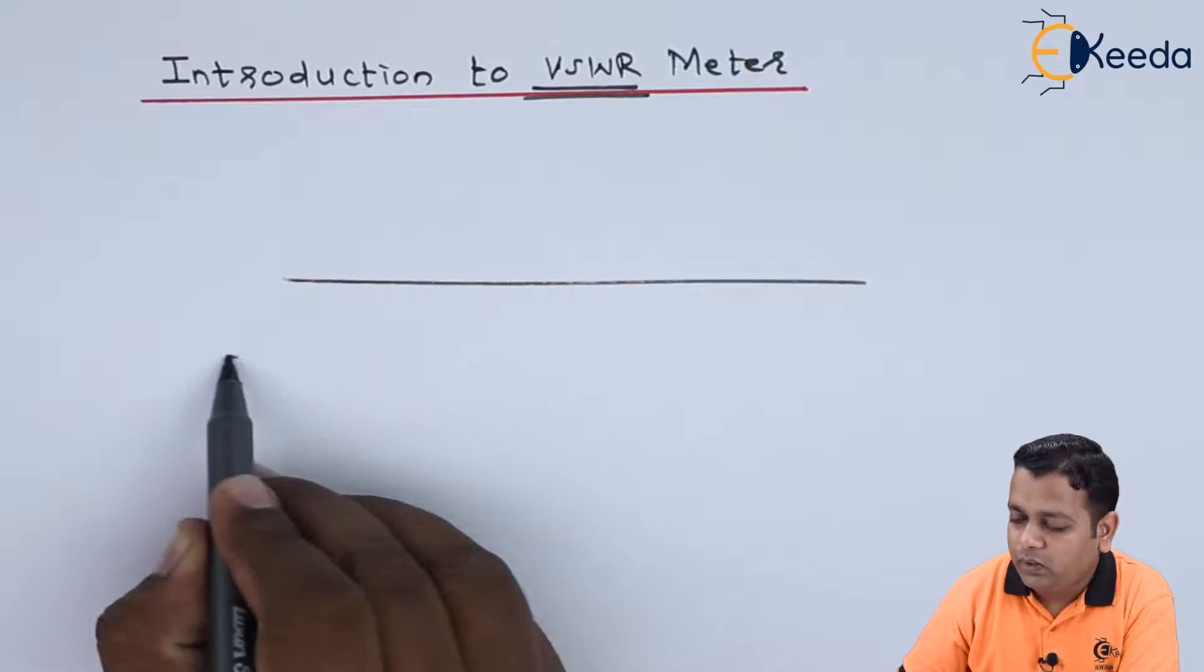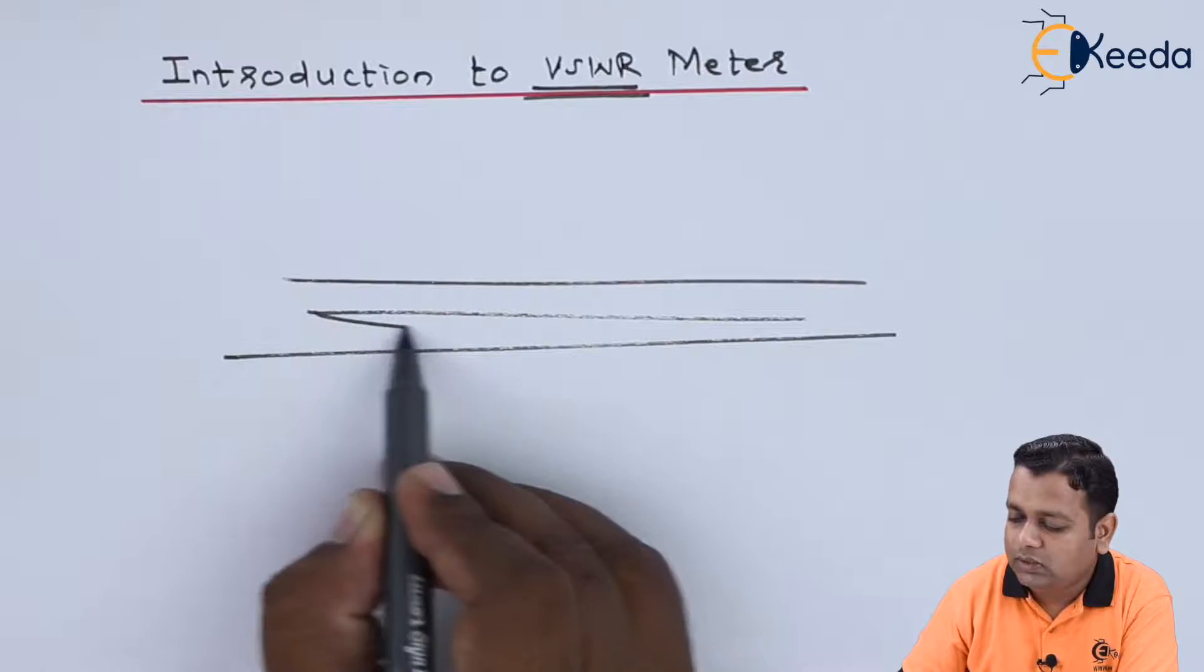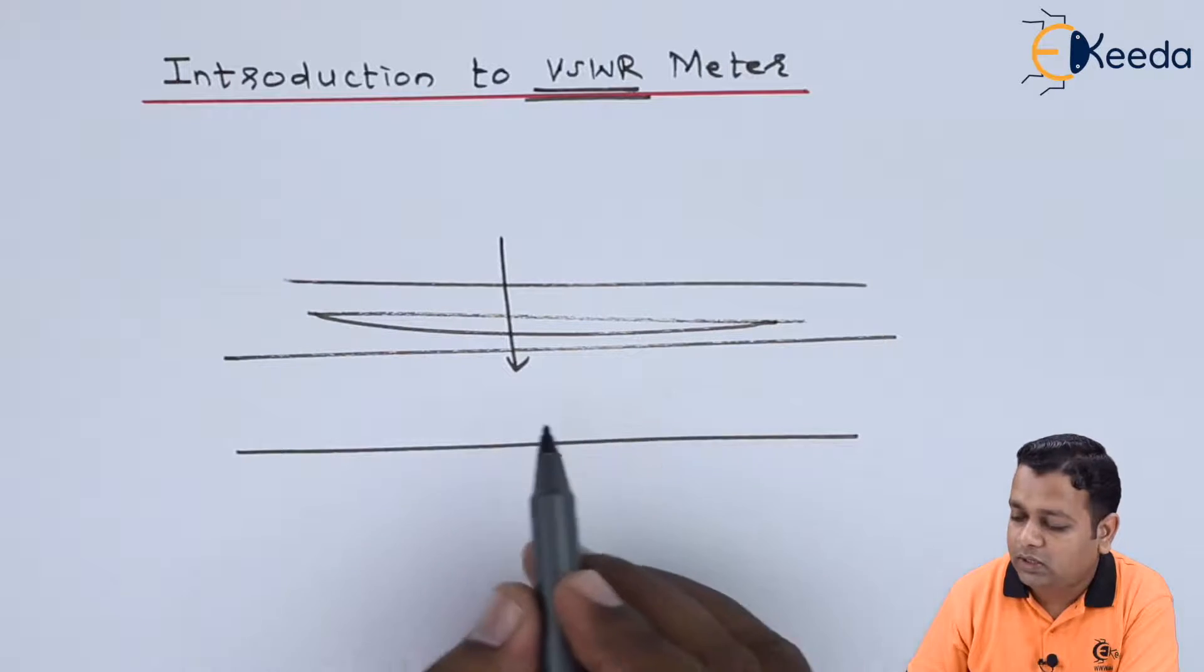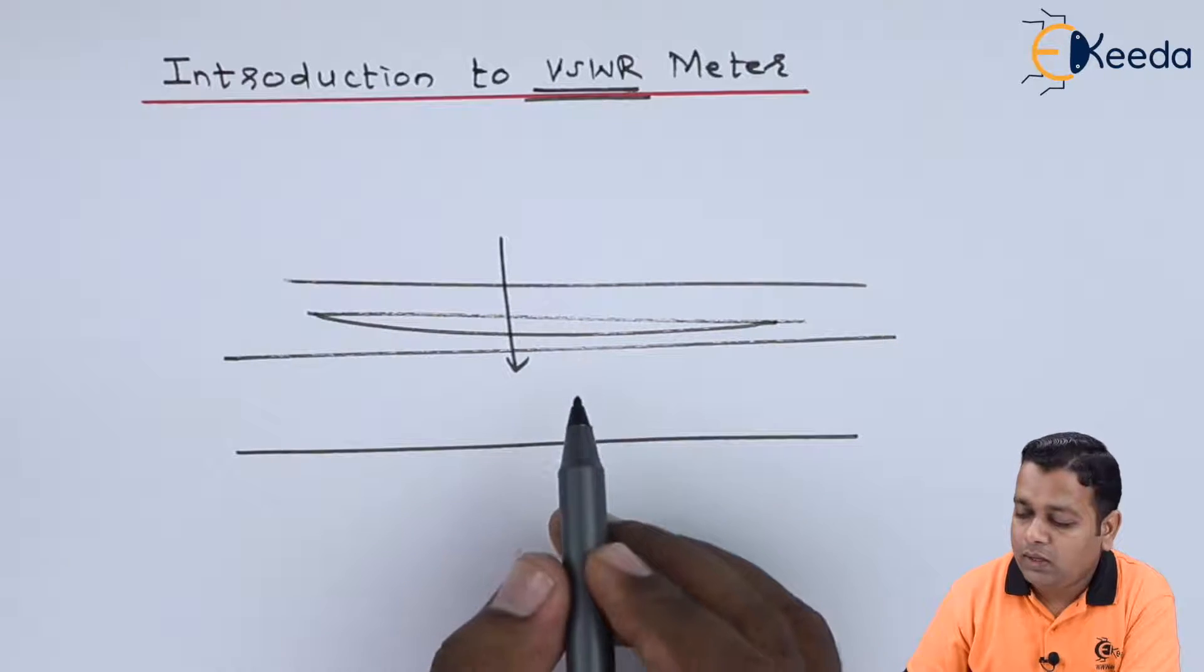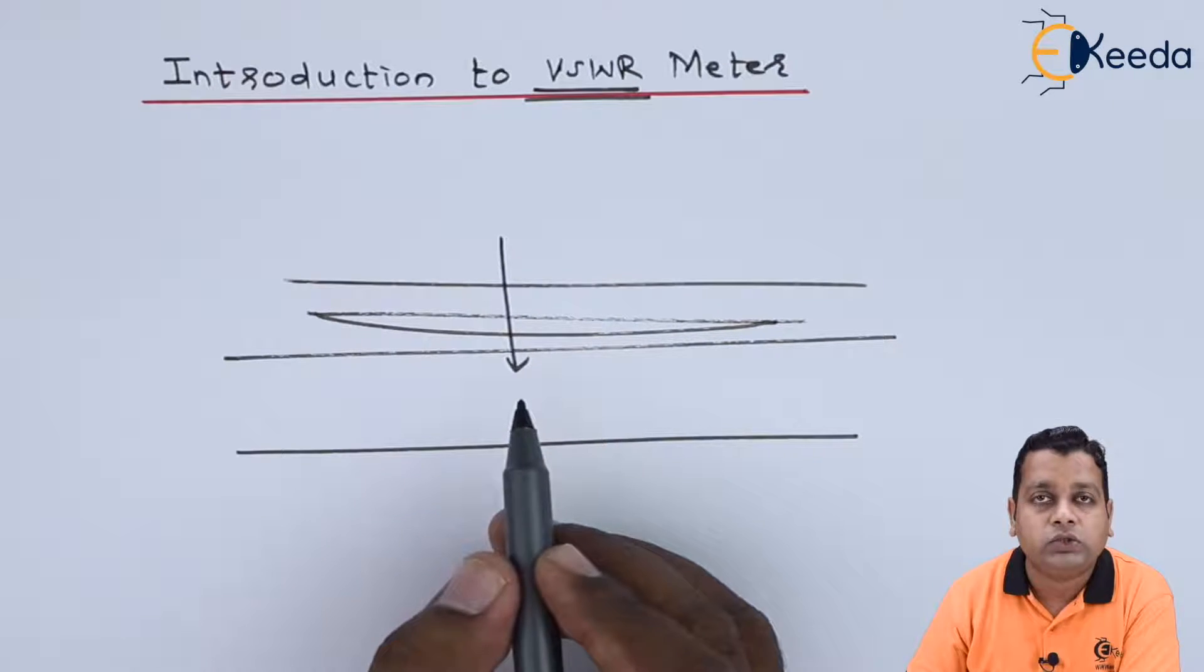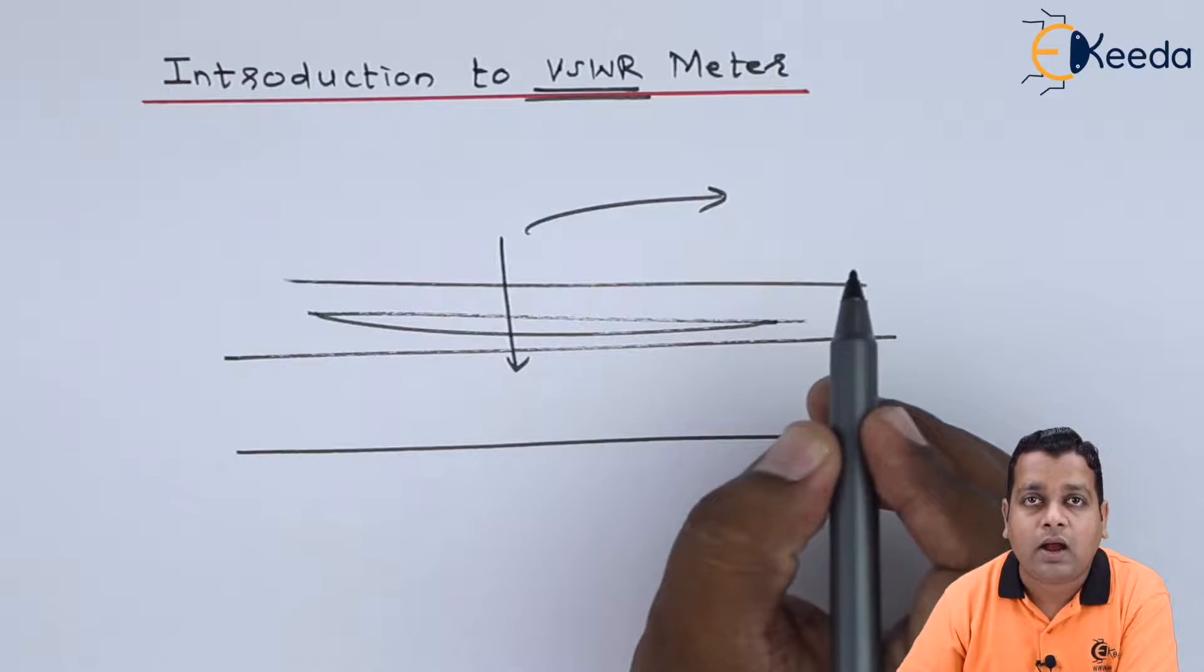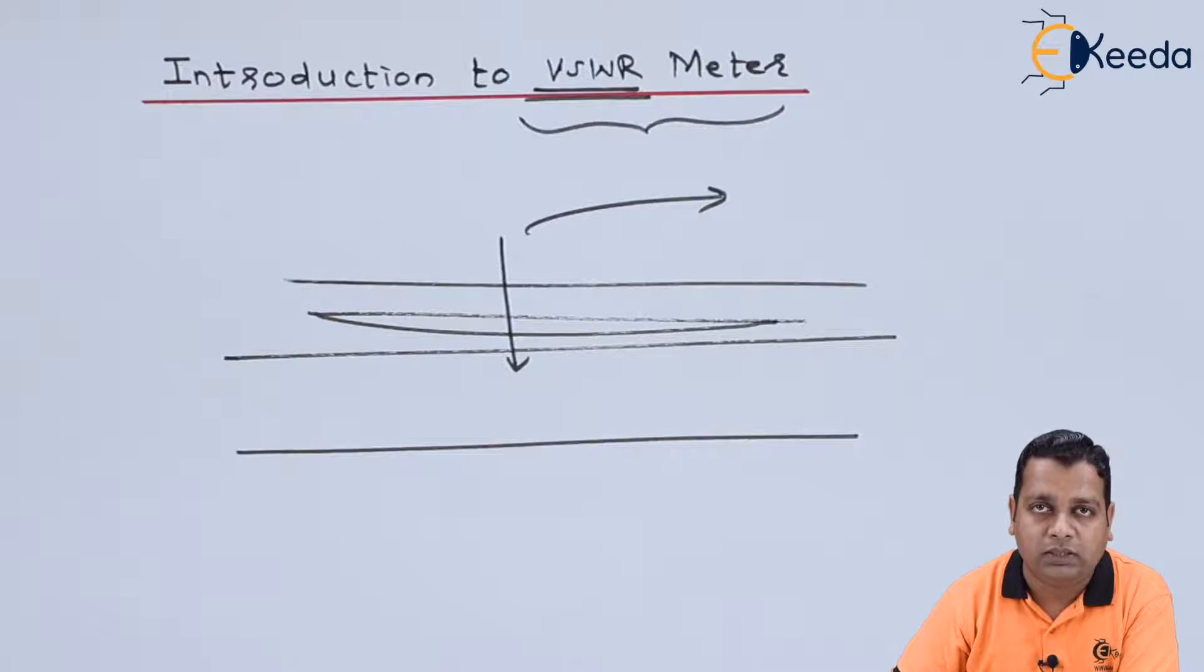Now basically when we have a waveguide, for practical case inside the waveguide we have such insertion slot and through this insertion slot we have the detector mount or the tunable detector sensor to measure the levels of voltages. Now while the sensor measures certain voltage level, whatever the output of that particular signal is there, it is further amplified, calibrated and provided as input to the VSWR meter.